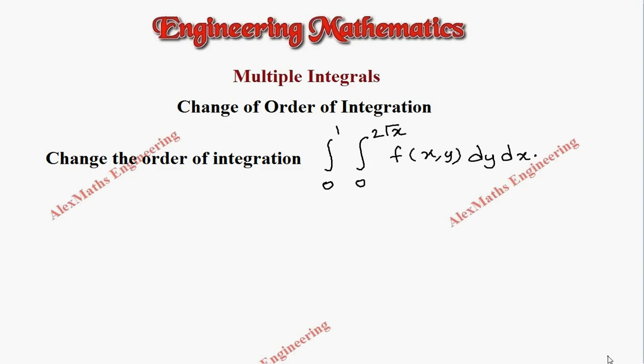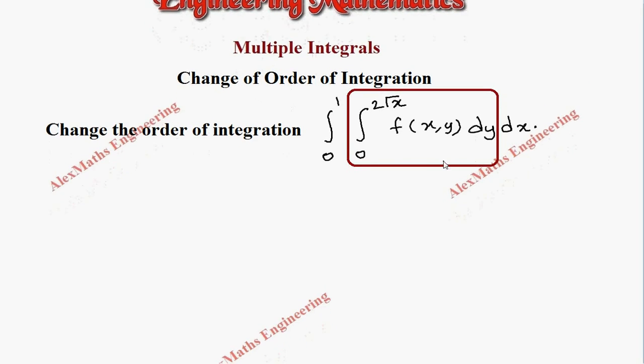Hi students, this is Alex. In this video we're going to change the order of integration. The given question is integral 0 to 1, integral 0 to 2 root x, f of x comma y, dy dx. Here the order is first we integrate with respect to y, then the result we integrate with respect to x. Now we're going to change the order of integration.